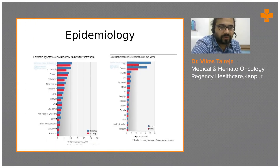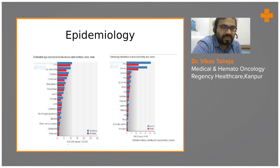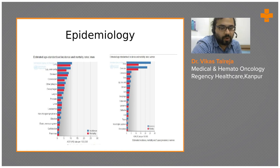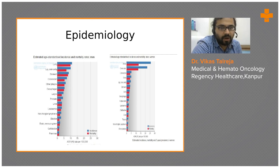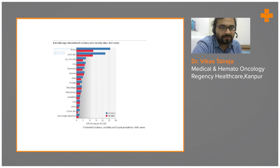Colorectal cancer is one of the most common cancers globally in terms of both incidence and mortality. Looking at the GLOBOCAN data, the age-standardized incidence rate and mortality rate among men ranks it fourth most common, and among women it is the third most common cancer.